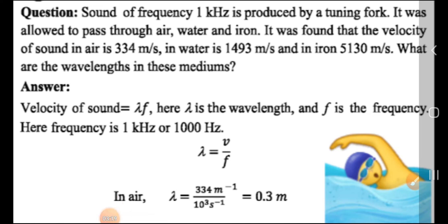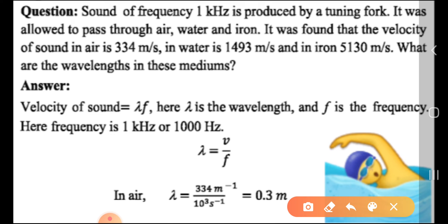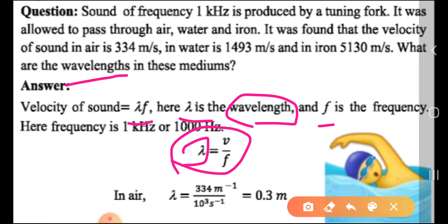Wavelength is the distance from any phase of the wave to the next identical phase — the distance traveled by a wave in one time period. Wave velocity is the distance traveled by a wave in one second. The formula is: velocity equals lambda times f (V = λf), so lambda (wavelength) equals V divided by f: λ = V/f.